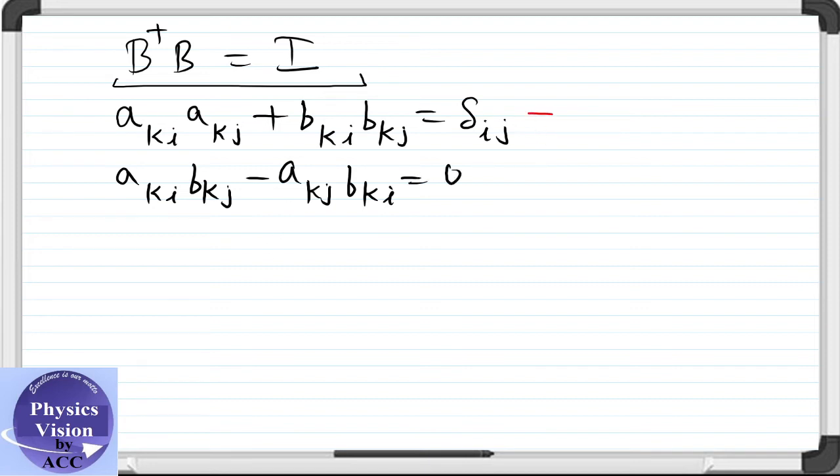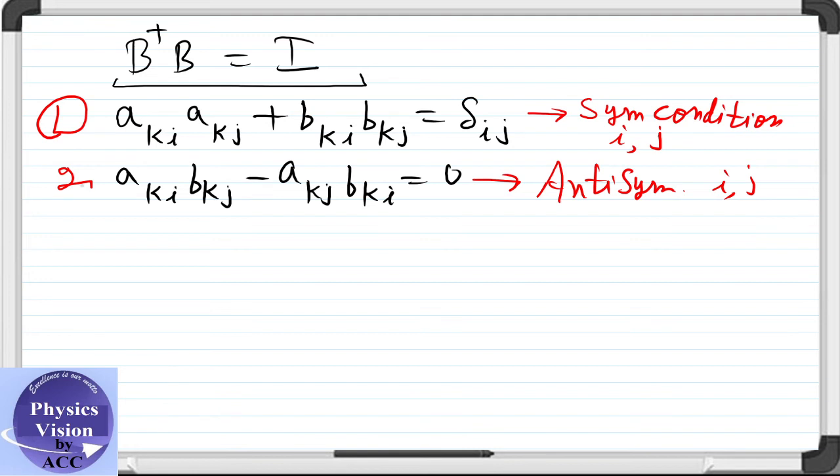We have one symmetric condition. This equation is symmetric under the exchange of i and j, and equation 2 is antisymmetric under the exchange of i and j. So there are two conditions: one is symmetric and two is antisymmetric.